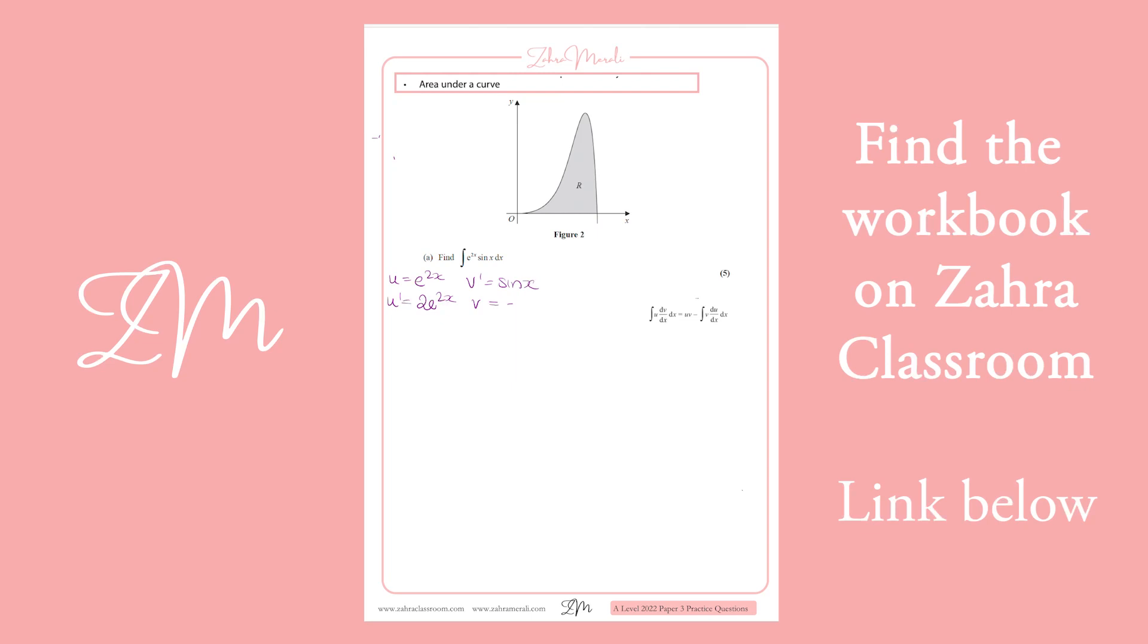So I differentiate the u and I integrate the sine x to give me minus cos x. Remember, sine differentiates to cos, which differentiates to minus sine, which differentiates to minus cos, which goes back to sine. So this is kind of the trick. We've got the integral of e to the 2x sine x dx equals u times v, so minus e to the 2x cos x, minus the integral of v times du/dx. That's going to give you minus 2 e to the 2x cos x dx. Now we've got minus and a minus, so we're going to change that to a plus.